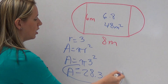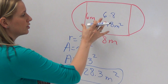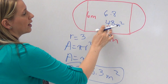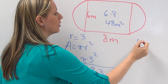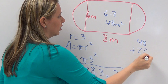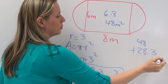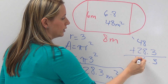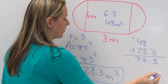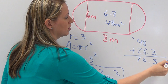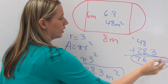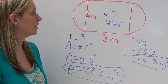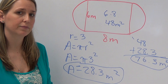So now we have our two half-circles put together to make the whole circle, and we have our rectangle. We just add them together: 48 plus 28.3 is going to be about 76.3 meters squared. And that's how we do area of a composite figure.